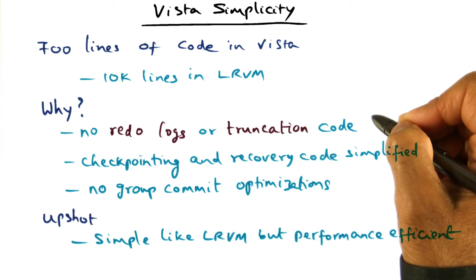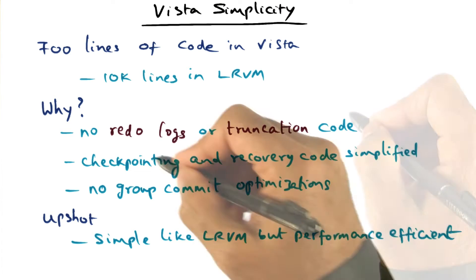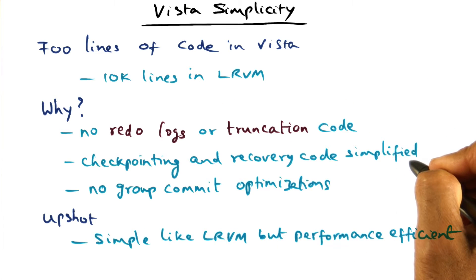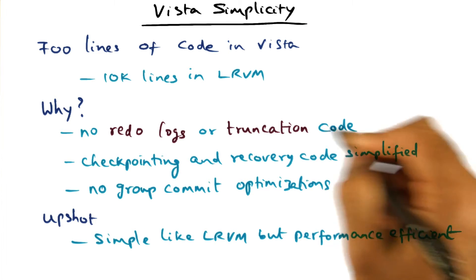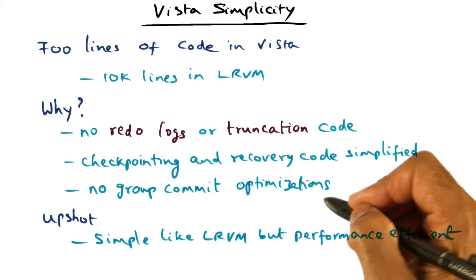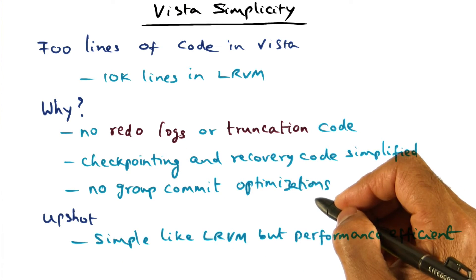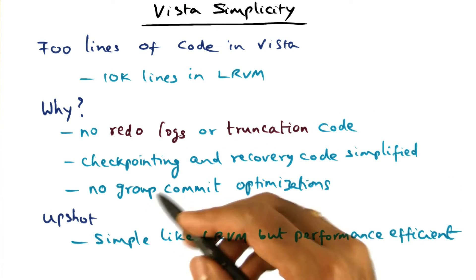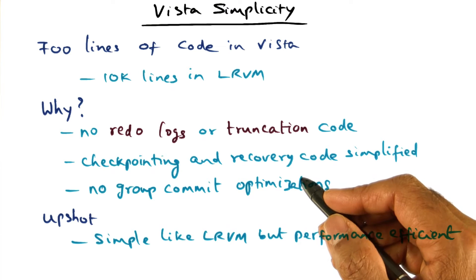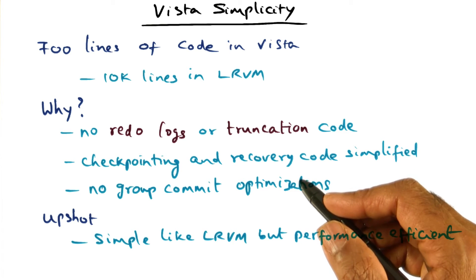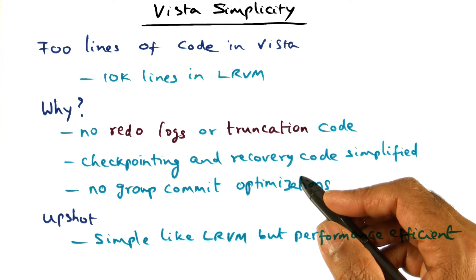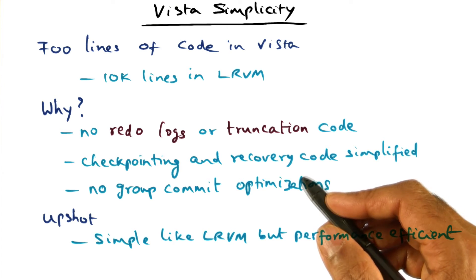Correspondingly, there is no truncation code, and checkpointing and recovery code is significantly simplified, and there is no group commit optimizations. The upshot of all of these simplifications comes from one simple trick: making a portion of the DRAM persistent, and implementing a file cache with that persistent portion of DRAM.